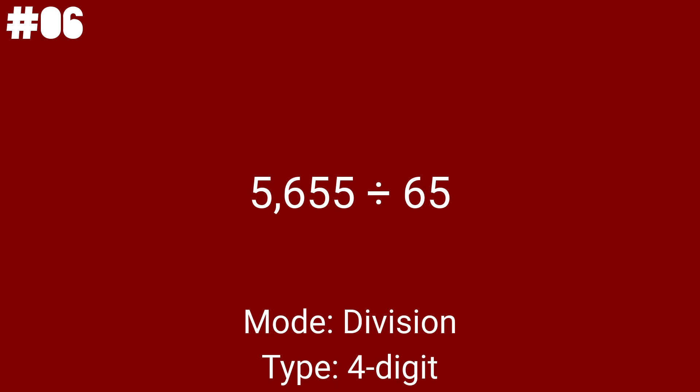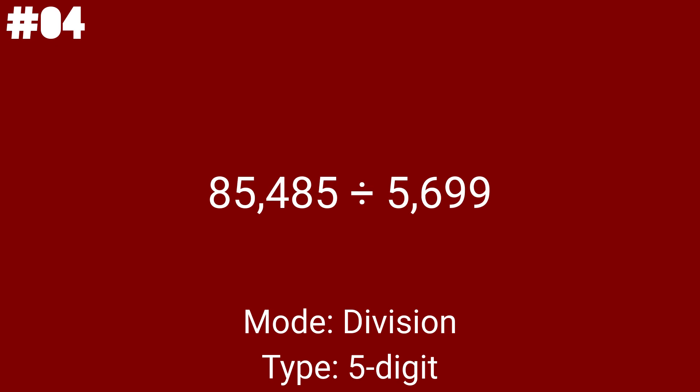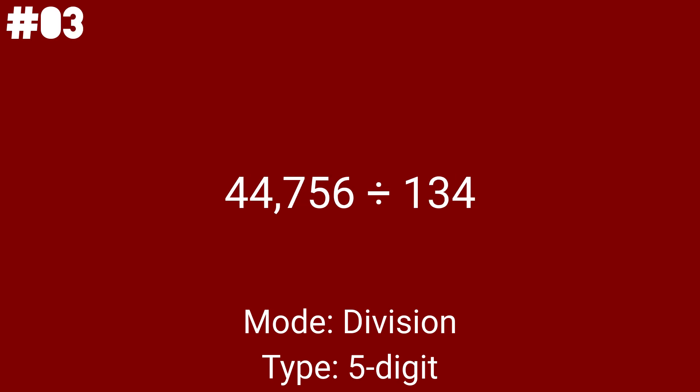Now let's move on to the last type of division problem — the 5-digit ones. 68091 divided by 3 is the first 5-digit division problem, and we are getting very close to the end, with 80% of the division problems done and 100% of the multiplication problems. 85485 divided by 5699 is the 52nd problem and the 4th to last math problem — this time you divide by a 4-digit divisor. 44756 divided by 134 is problem number 53 out of 55.